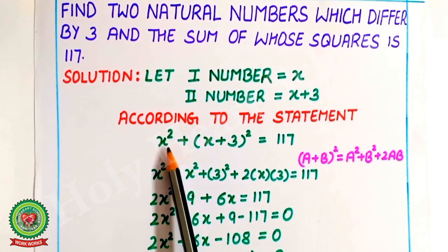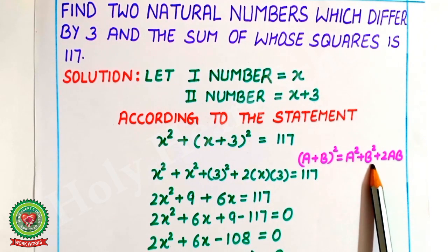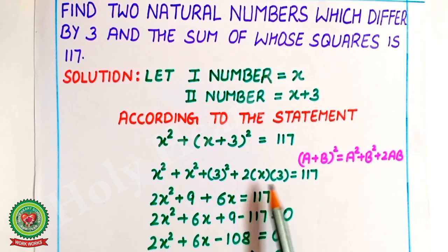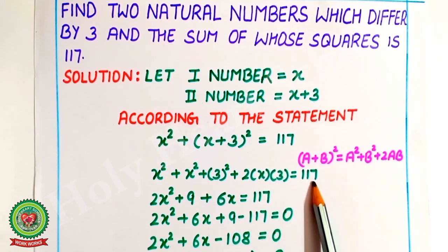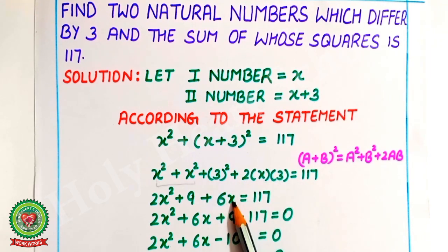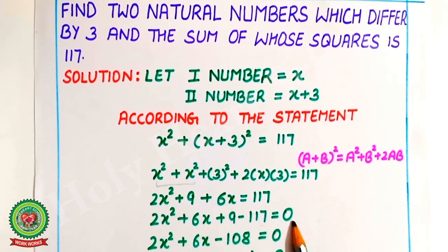Expanding using the (a plus b) whole squared formula — a squared plus b squared plus 2ab — we get: x squared plus x squared plus 9 plus 6x equals 117. Collecting terms: 2x squared plus 6x plus 9 minus 117 equals 0, which simplifies to 2x squared plus 6x minus 108 equals 0.